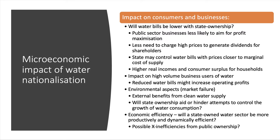Micro can also allow you to bring in aspects of market failure. There are significant external benefits from a reliable, clean, efficient water supply. Will state ownership change the game in terms of trying to get towards more sustainable growth of water consumption? Are we consuming too much water in the UK — a case for higher prices to reduce consumption? At a micro level you should also bring in economic efficiency: prices may fall closer to marginal cost — is that allocatively more efficient? What about productive efficiency, dynamic efficiency, innovation in the industry, or possible X-inefficiencies from moving to public ownership?